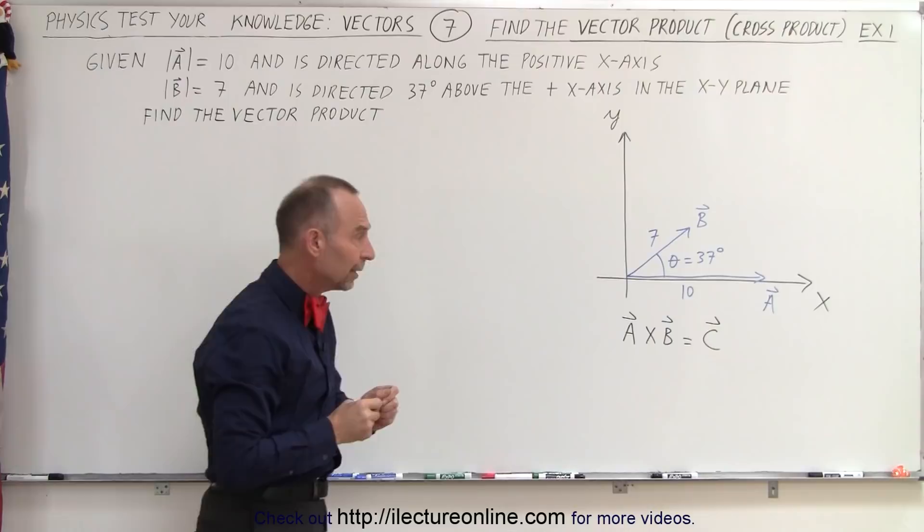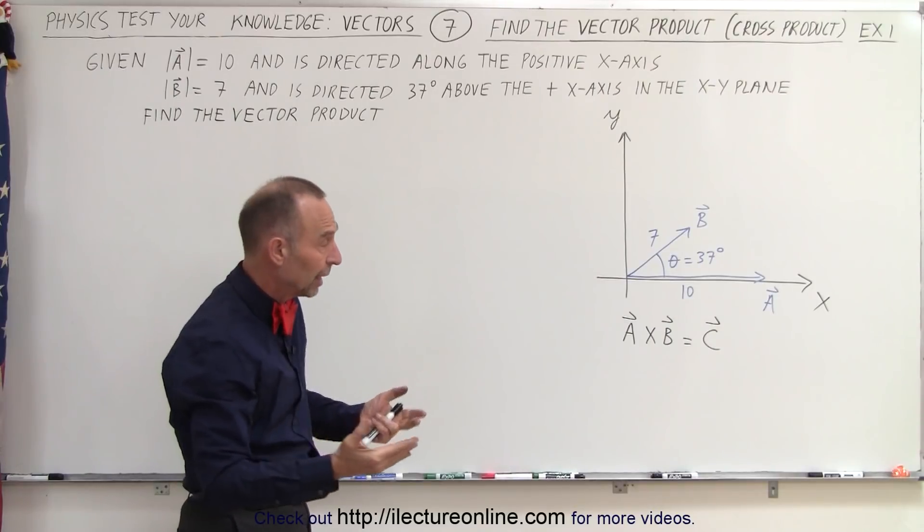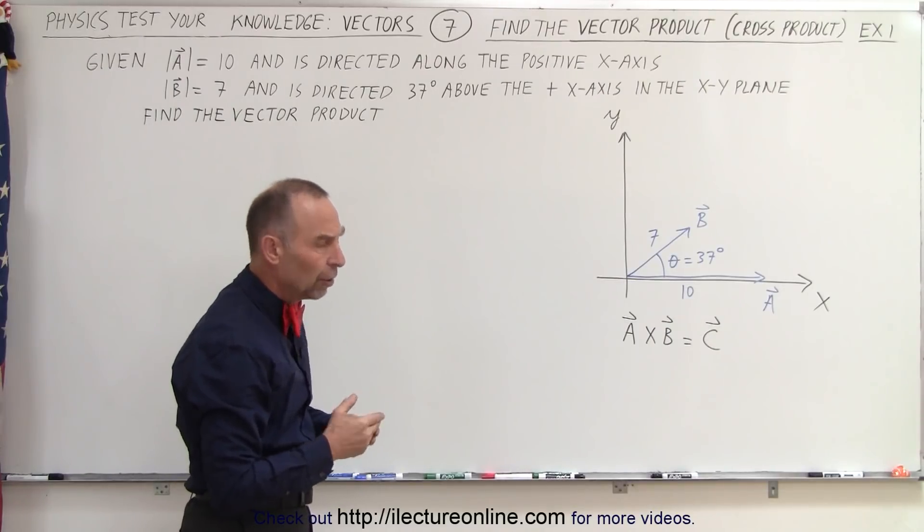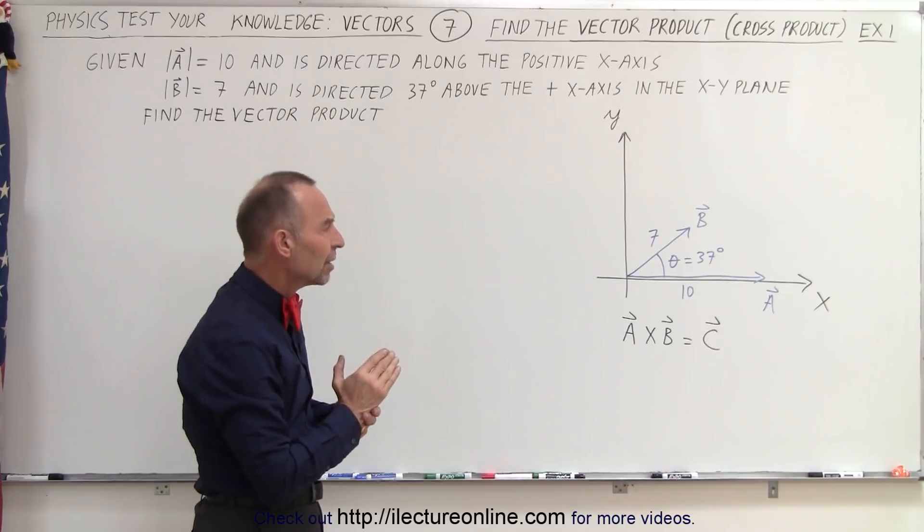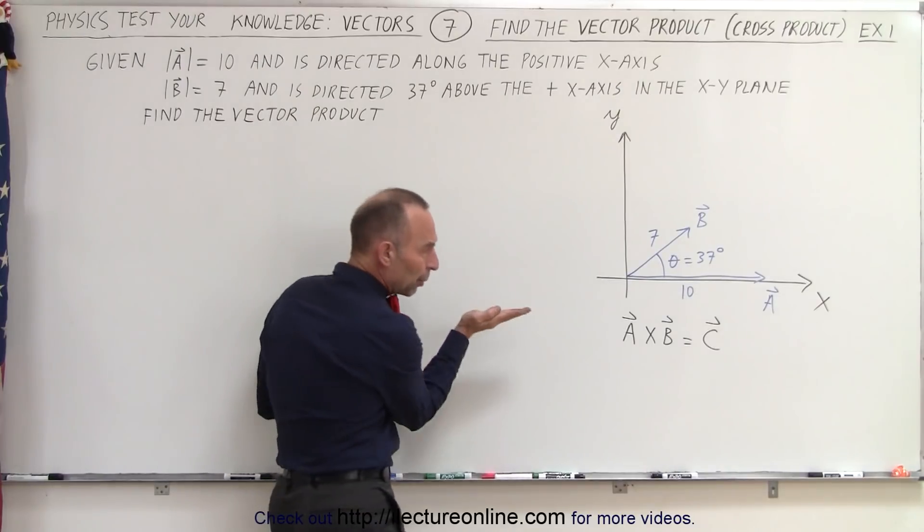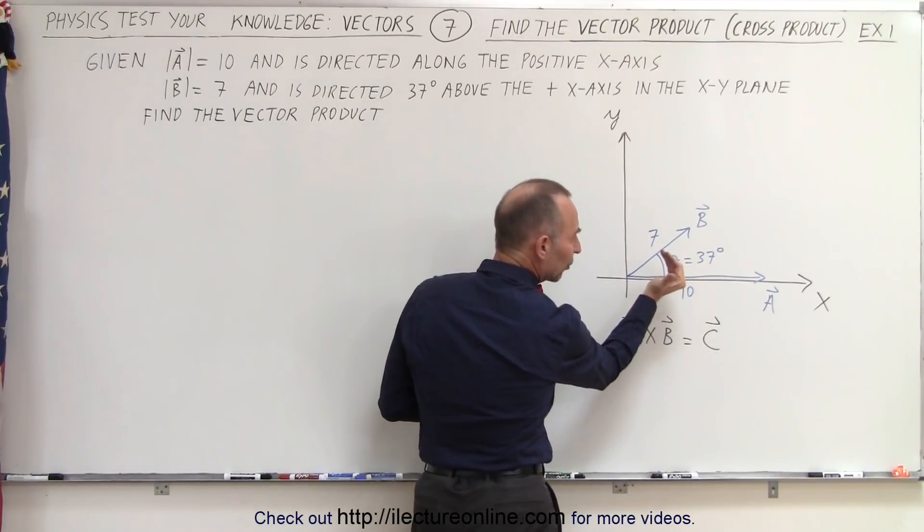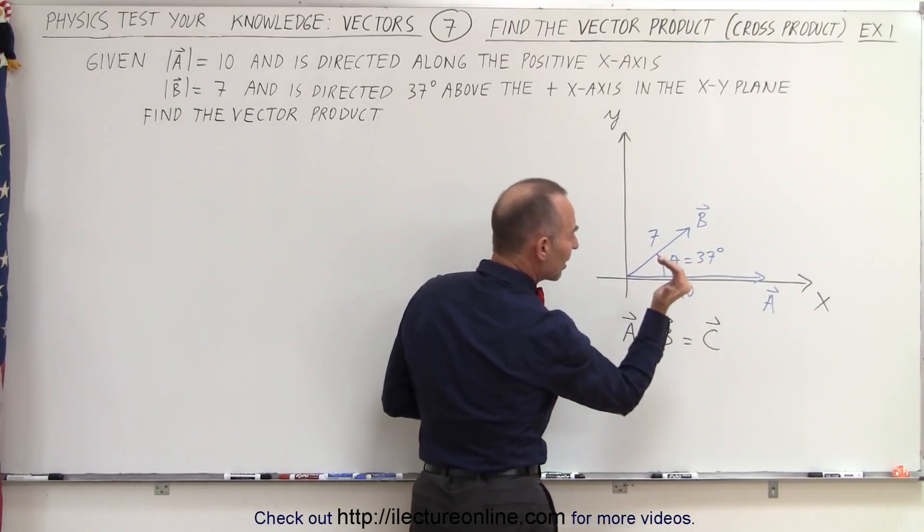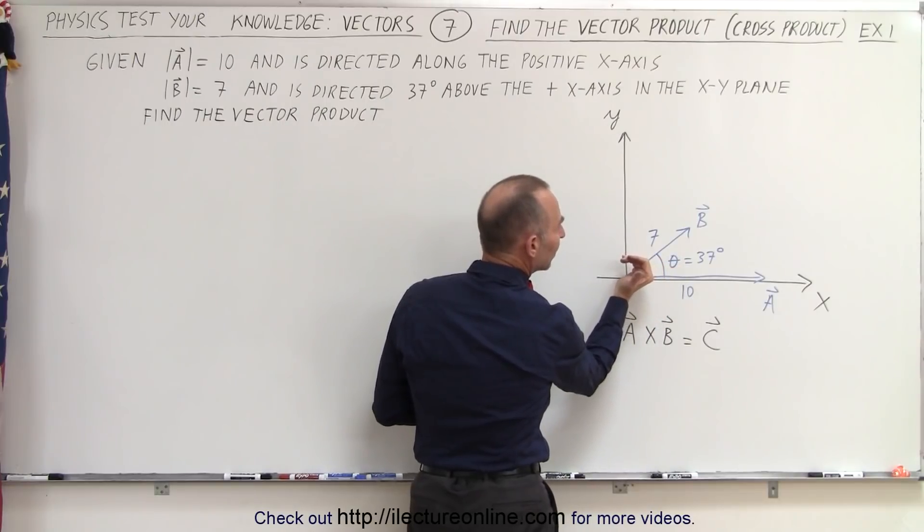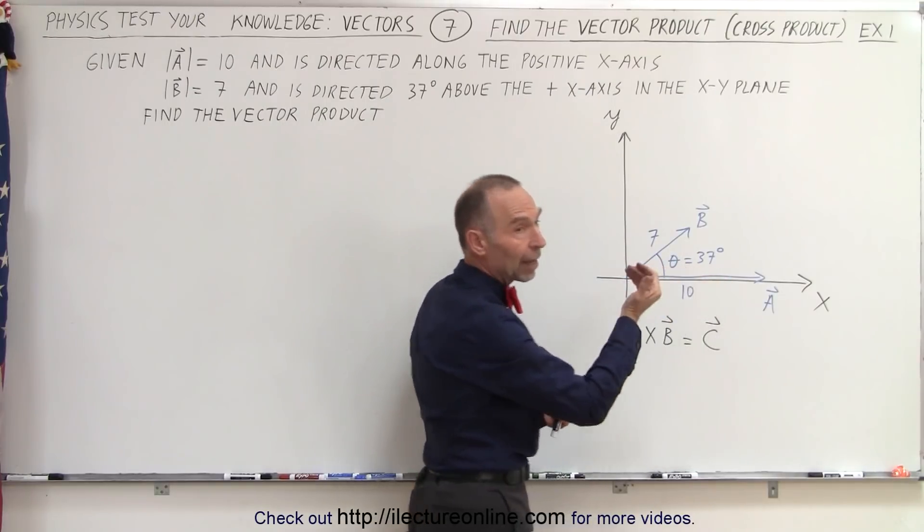What will C look like? C will have a certain magnitude and a certain direction. To find the direction of C, we use our right-hand rule. We point our fingers in the direction of A, curl them towards B, and then our thumb will point in the direction of C, which means that C will be pointing in the positive Z direction coming out of the board.